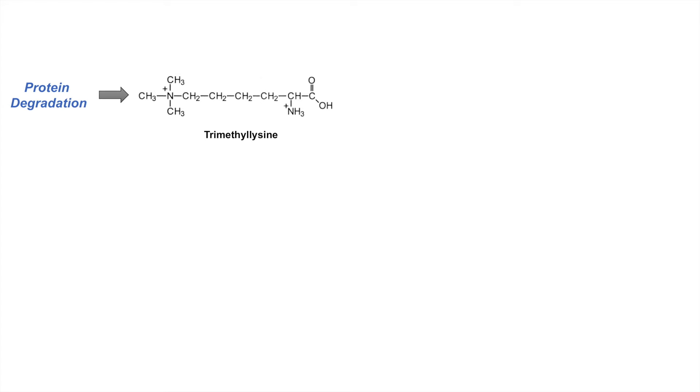To begin the process of carnitine biosynthesis, the cell requires lysine-derived residues. It gets residues such as trimethyl lysine through protein degradation, typically lysosomal protein degradation. Trimethyl lysine is a derivative of lysine — it is lysine with three methyl groups attached to the nitrogen. These three methyl groups come from methionine through methyl transferase reactions using S-adenosyl methionine as a methyl group donor.